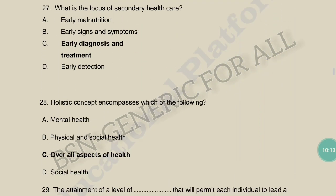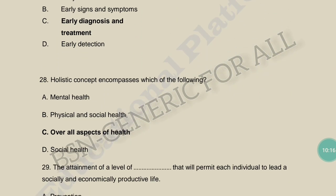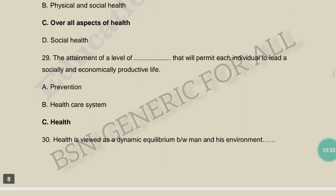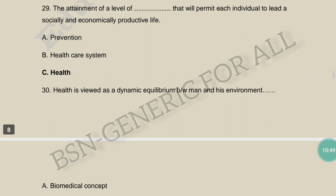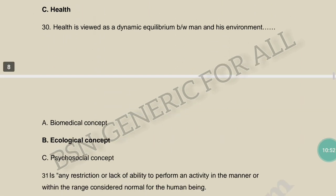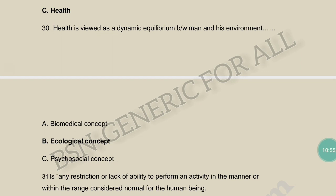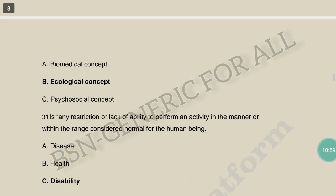Holistic concept encompasses which of the following? Holistic health focuses on mental, physical, and social health — the overall aspect. Holistic health is a head-to-toe approach. Health viewed as a dynamic equilibrium between man and his environment is the ecological concept, not the biomedical or psychosocial concept.